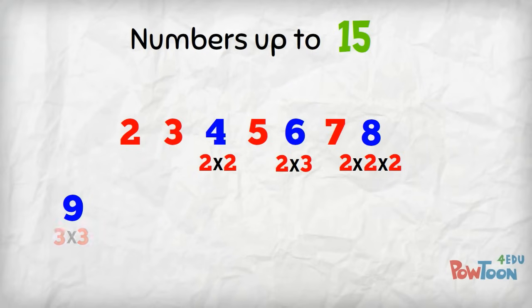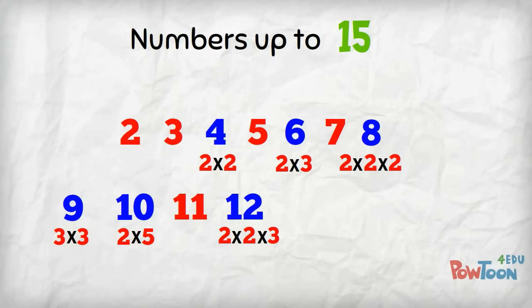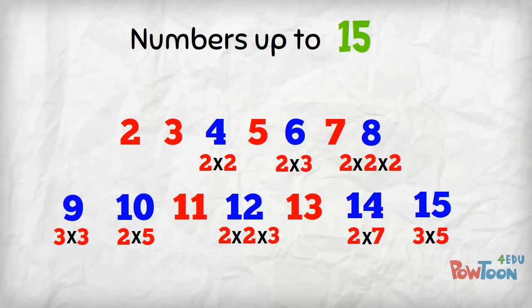9 is from 3 times 3. We get 10 from 2 times 5. 11 is prime. 12 is from 2 times 2 times 3. 13 is prime. 14 is from 2 times 7. And we get 15 from 3 times 5.